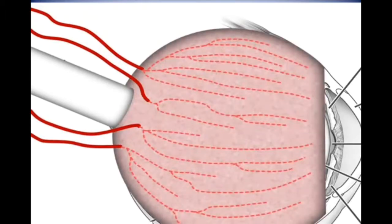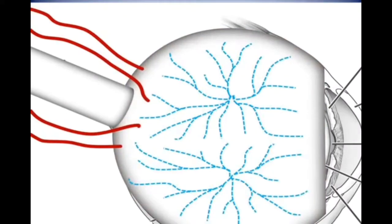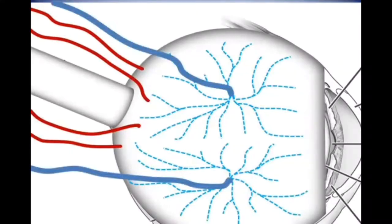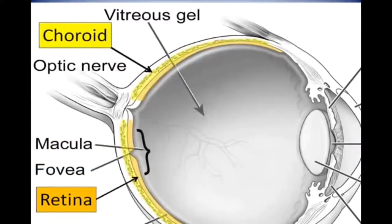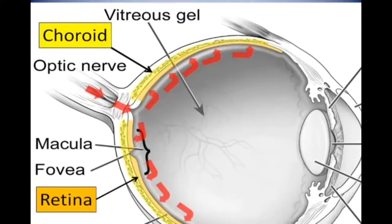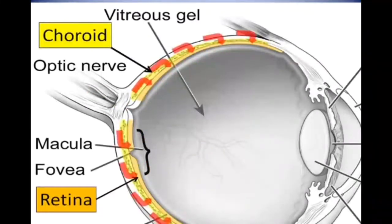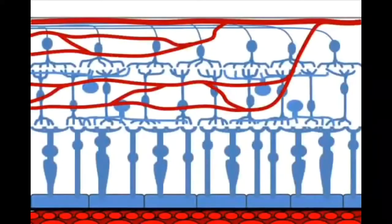After the blood has circulated through the capillaries of the choroid, the oxygen-depleted blood flows into small veins that coalesce into larger veins. These larger veins exit the eye and are called vortex veins. So these two circulation pathways supply blood to the retina: the central retinal artery and the central retinal vein supply blood to the retina from the inside of the eye, while the choroid supplies blood to the retina from underneath the retina. Inside the retina, these two pathways work together to nourish the retinal nerve cells.